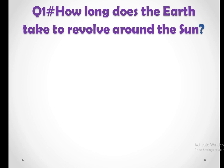Our first question is how long does the earth take to revolve around the Sun and the answer is one year. I take one year to revolve around the Sun.